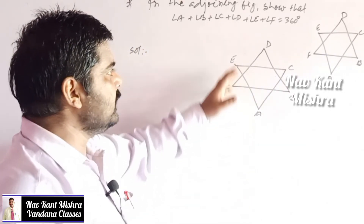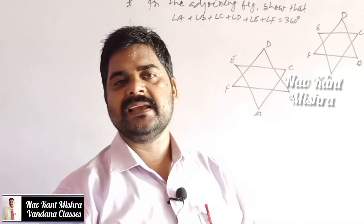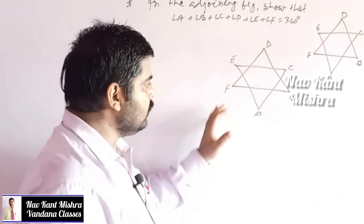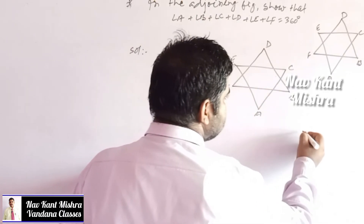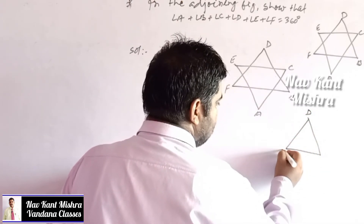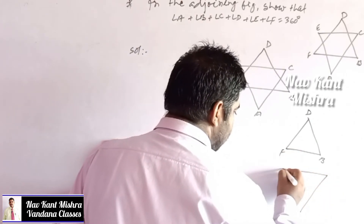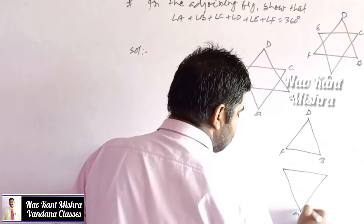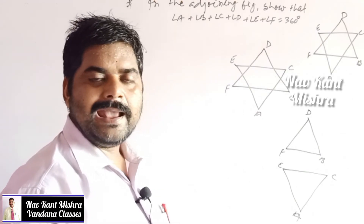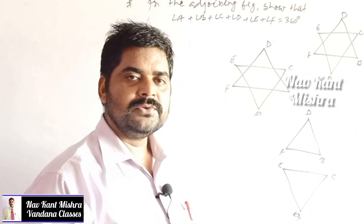In this question, a figure is given and you need to calculate angle A + angle B + angle C + angle D + angle E + angle F, which equals 360°. For the solution, draw the figure. You can see it contains two triangles: triangle DFB and triangle ACE. Using the angle sum property separately for both triangles and adding the results gives this result.